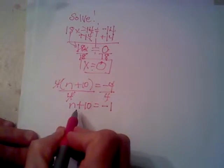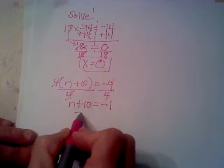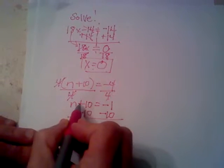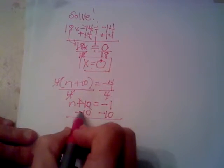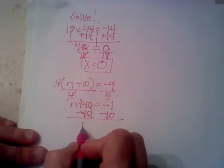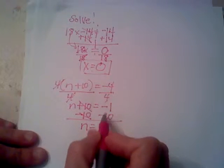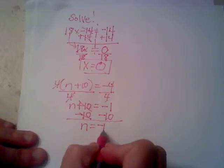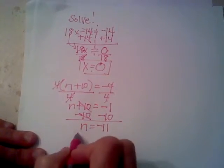And then solving this equation, I'm going to move the 10 over by subtracting 10 from both sides. Positive 10 minus 10 is 0, so all I have left over here is n. Negative 1 minus 10 - same sign, I add and keep the sign, so the answer is negative 11.